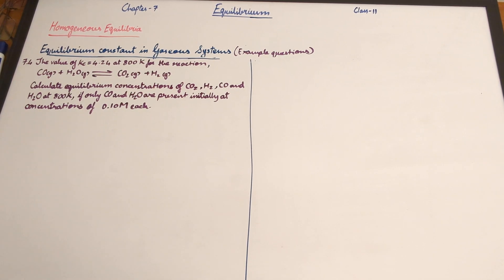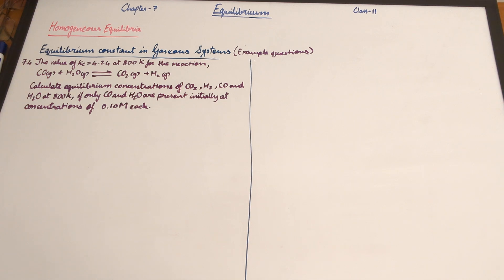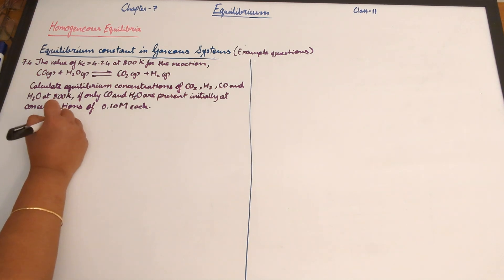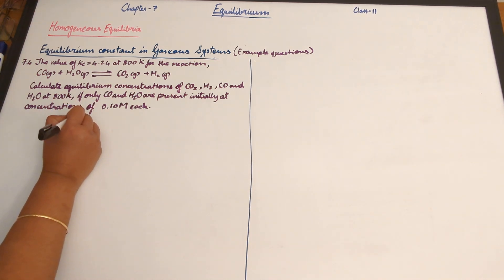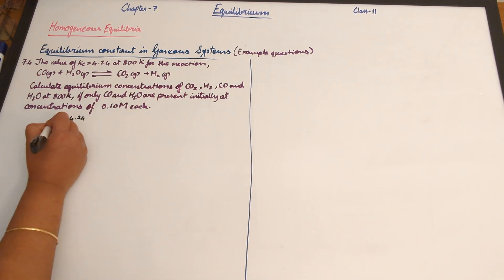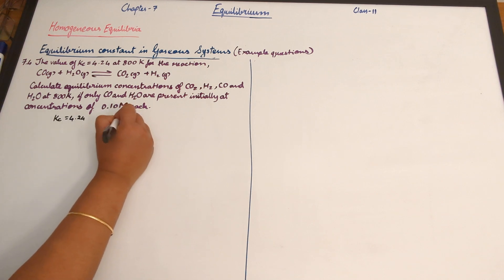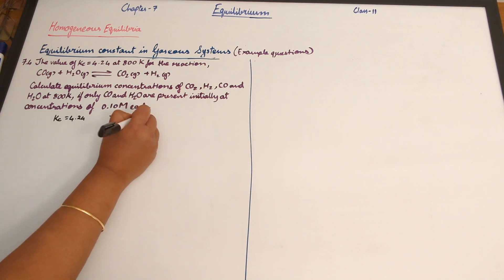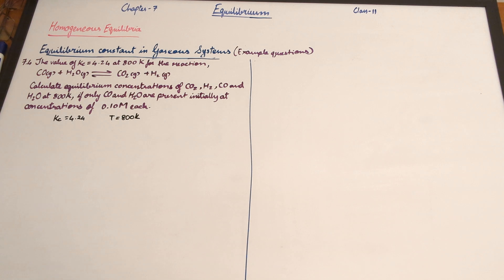In the previous video, we discussed example problems 7.3 and 7.5. In this one, we're discussing question number 7.4, on page 203 in your textbook. We've been given the value of Kc equals 4.24 at a temperature of 800 Kelvin for the following reaction.